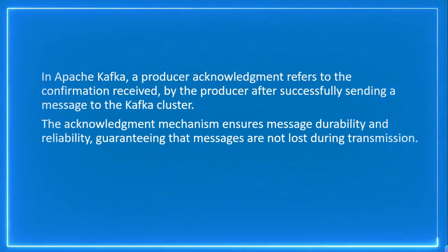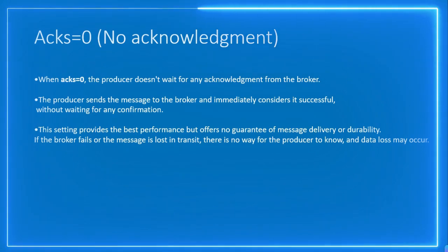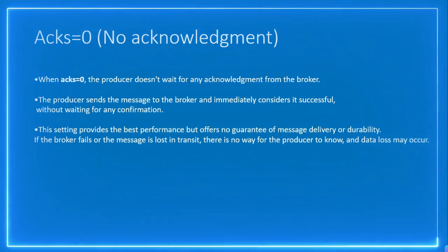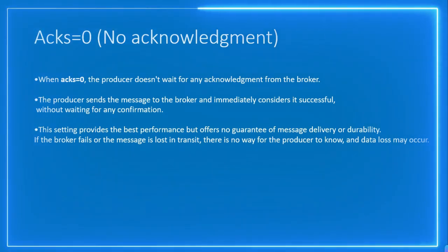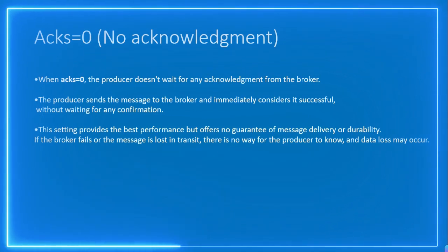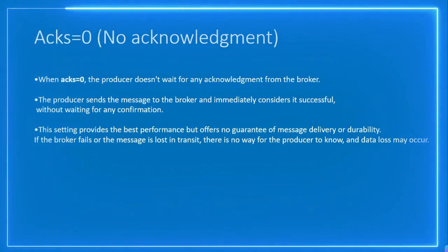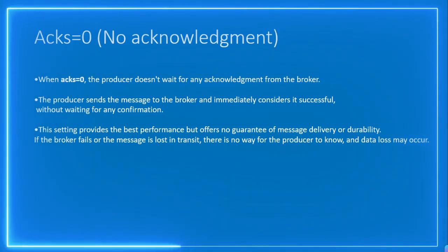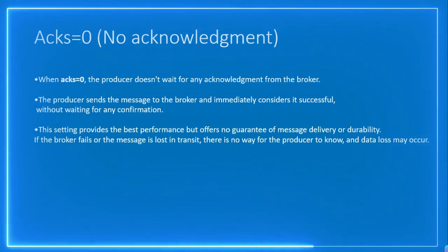There are basically three levels of acknowledgements. The first is acknowledgement equal to zero, which is called no acknowledgement. When we set acknowledgement equal to zero, the producer's job is just to send the message — it will not wait to find out whether the message has been received by the cluster or not. It assumes that the broker might have received the message.